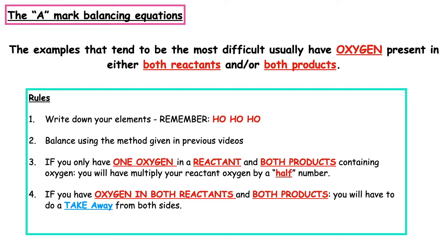We are going to use the same box method that we used in lessons six and seven. If we only have one oxygen present in a reactant and oxygen present in both products, we will have to balance our reactant oxygen by a half. If you have oxygen present in both reactants and both products, you'll have to do a takeaway on both sides of the equation.